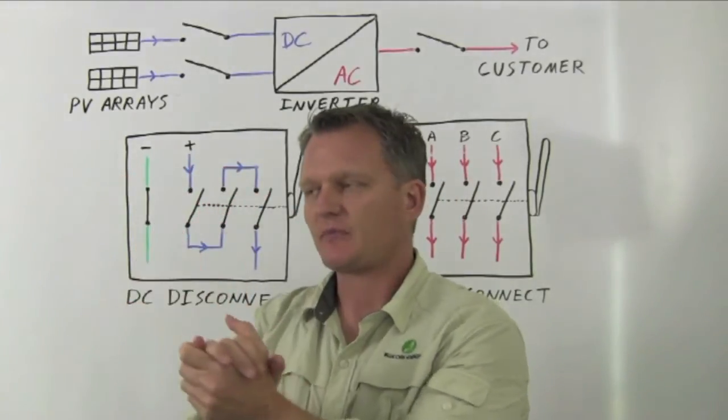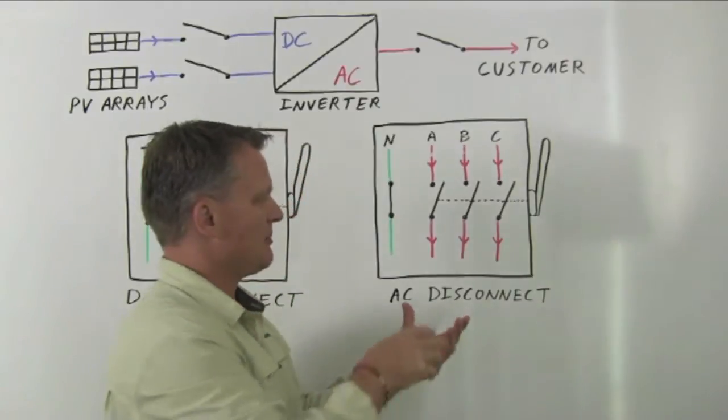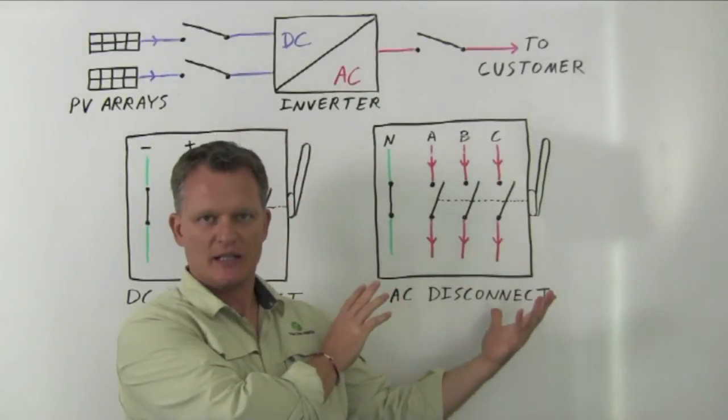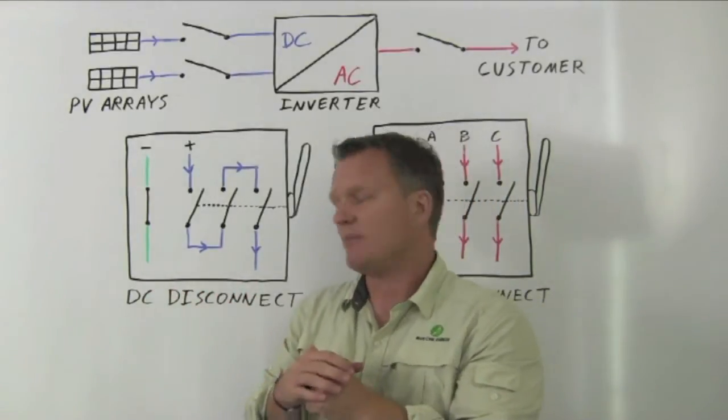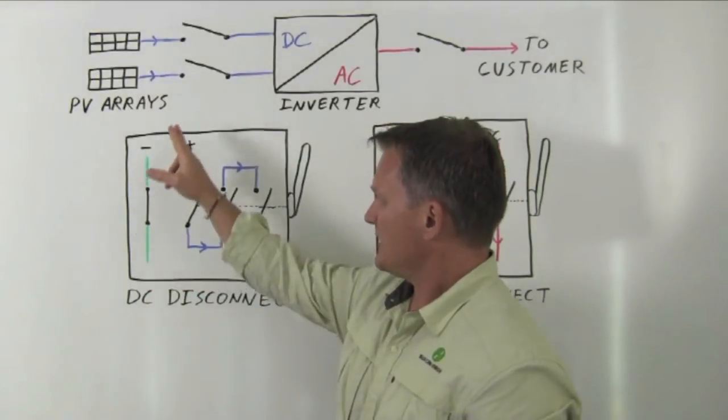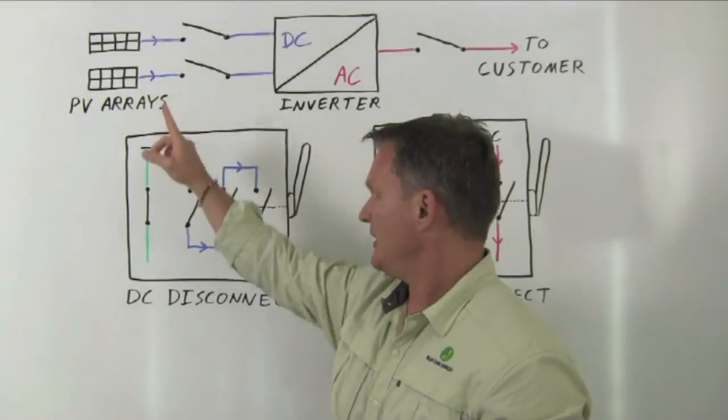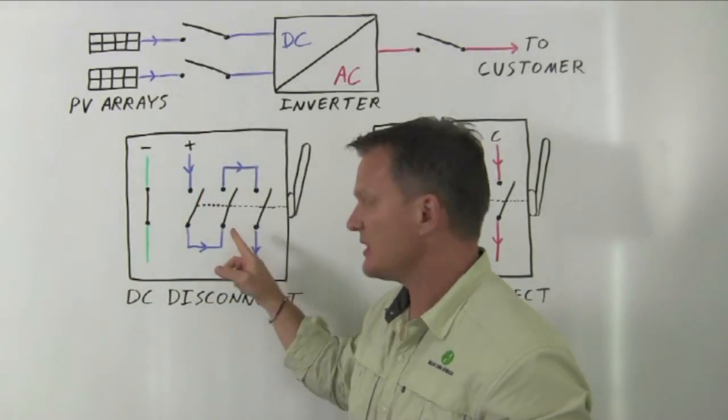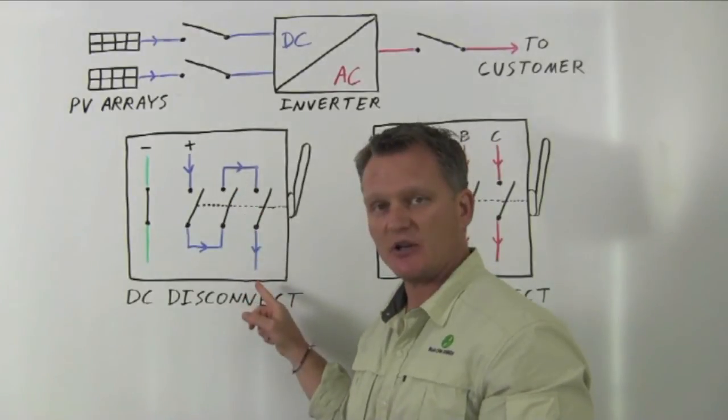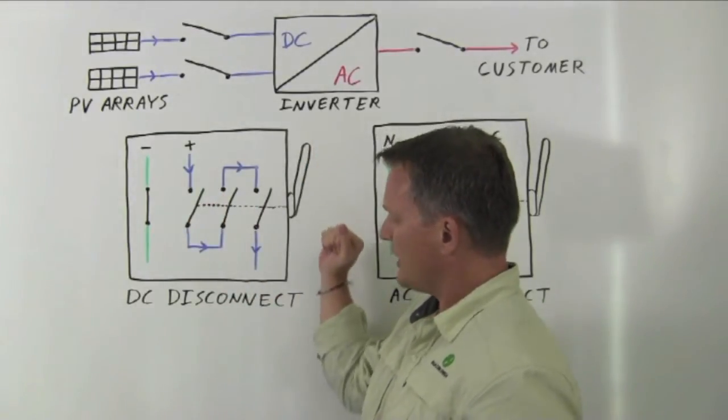So how do we take what's typically a commercially available AC disconnect and use it in a DC disconnect application? Well, one way to do it is to take a single DC circuit and actually wire it through all three switches in series, just like shown here. So when you actually pull the handle on this disconnect, all three switches again open at the same time.